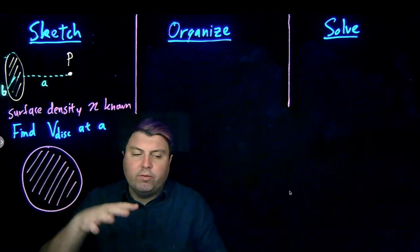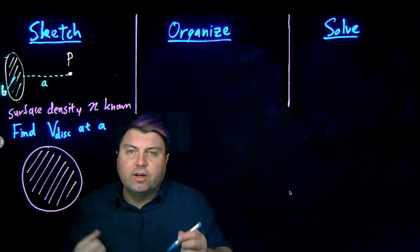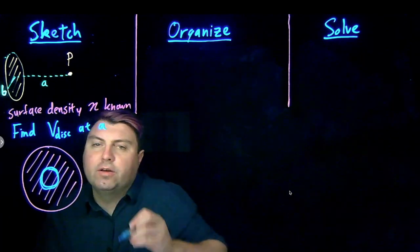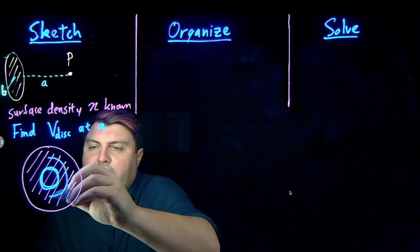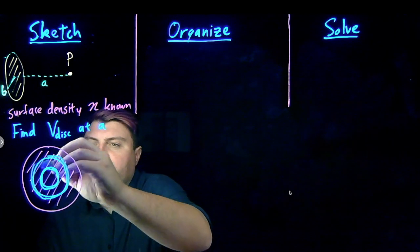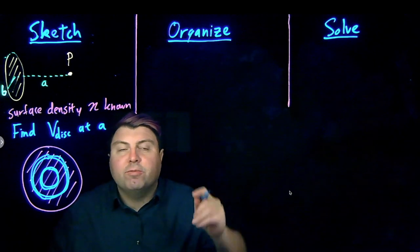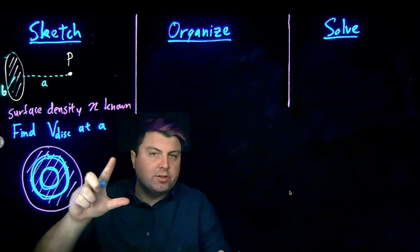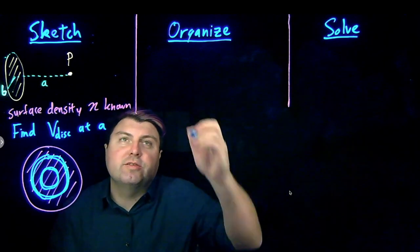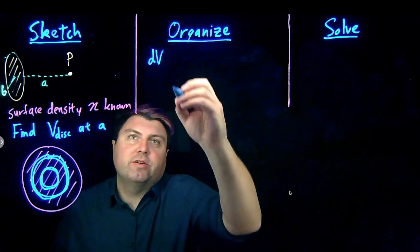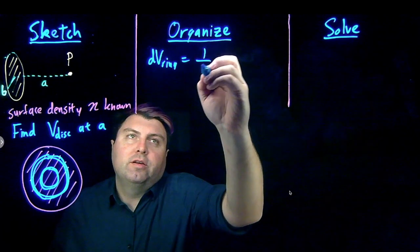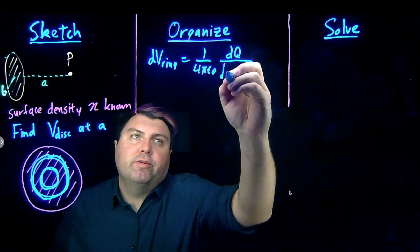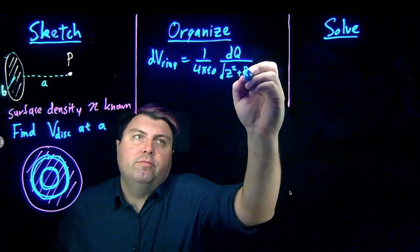We can think about what we want to make this disk out of. One thing we can make it out of would be a ring. We can make it out of another ring, and if we add up all of these individual rings, we get a disk. So we can write the electric potential of a ring and add up the electric potentials of these rings, just like we added up the electric fields. So dV of a ring is 1 over 4π ε₀ times dq over the square root of z squared plus r squared.